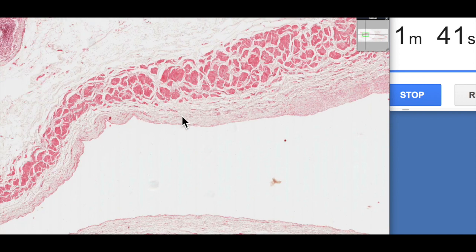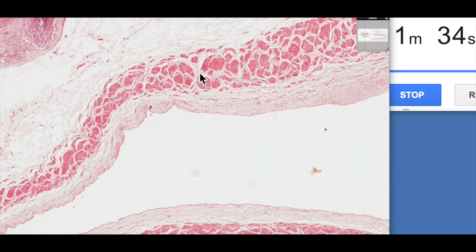Again we can see the tunica media is largely just connective tissue. We've got a few squiggly smooth muscle cells but then most of the smooth muscle exists in the tunica adventitia and it's very unique to the vena cava.